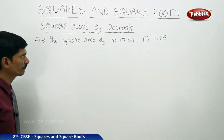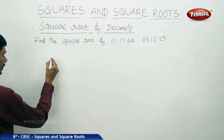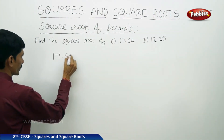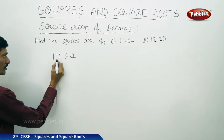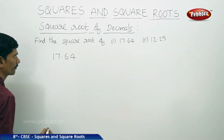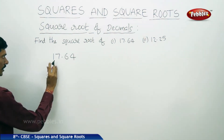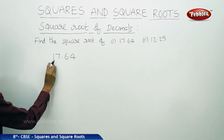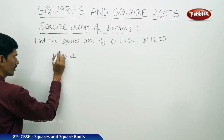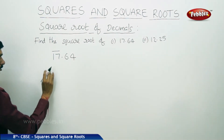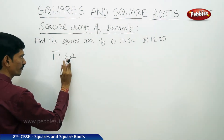Now we will find the square root of decimals. Let us find the square root of 17.64 and 12.25. First we take 17.64. There are two parts: the integral part 17 and the decimal part 0.64. In the integral part, we use the bar over every two digits from right to left, from unit's place. There are only two digits in the integral part, so we use only one bar. In the decimal part, we use the bar from left to right, from the first decimal place.